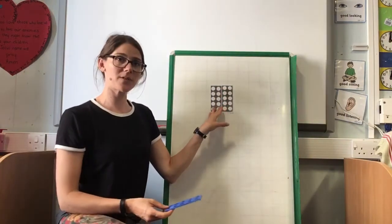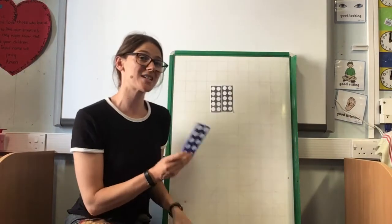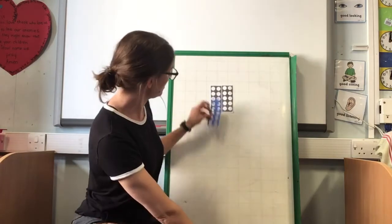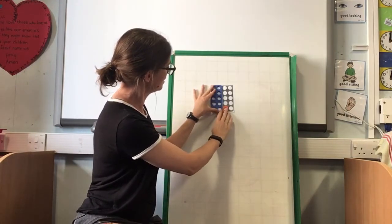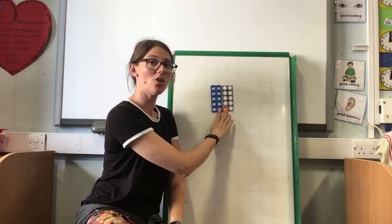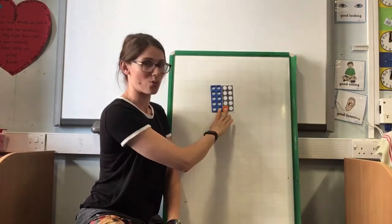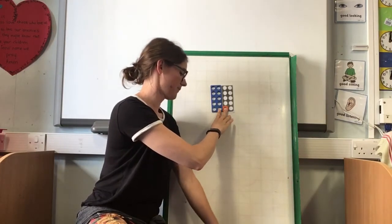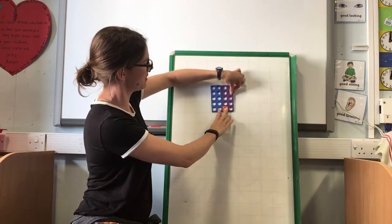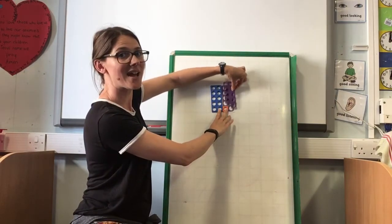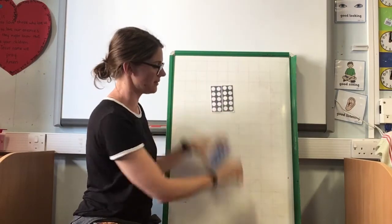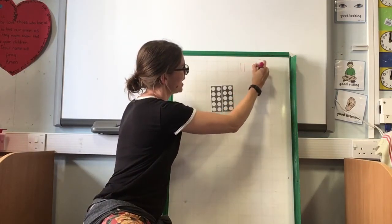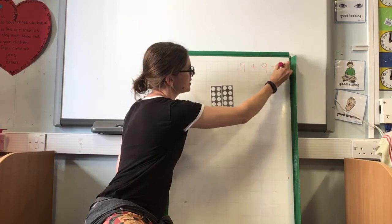So we are going to use our 20 frame. We're going to put some of our numbers on the 20 frame and we're going to see what's missing — that's how we're going to do our bonds. So let's start with 11. If we put 11 on the 20 frame, what is missing? What shape would go in that place? The 9 would go. So 11 add 9 equals 20. So I'm going to write that down: 11 add 9 equals 20.